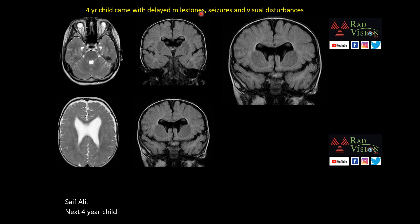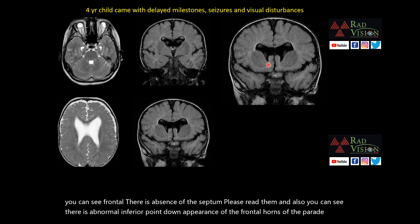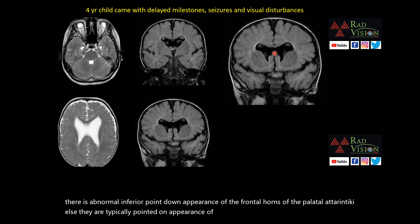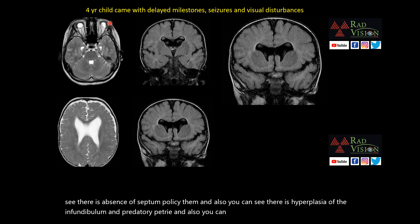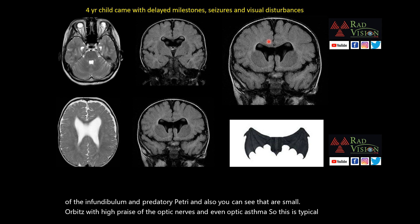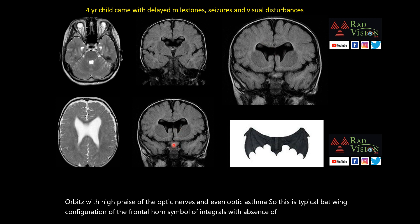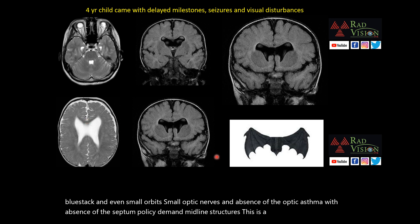Next case: a 4-year child with delayed milestones, seizures, and visual disturbances. There is absence of the septum pellucidum and a typical inferior pointed-down appearance of the frontal horns of the bilateral lateral ventricles. There is hypoplasia of the infundibulum and pituitary, small orbits, hypoplasia of the optic nerves, and absence of the optic chiasm and midline structures — a classical case of septo-optic dysplasia.